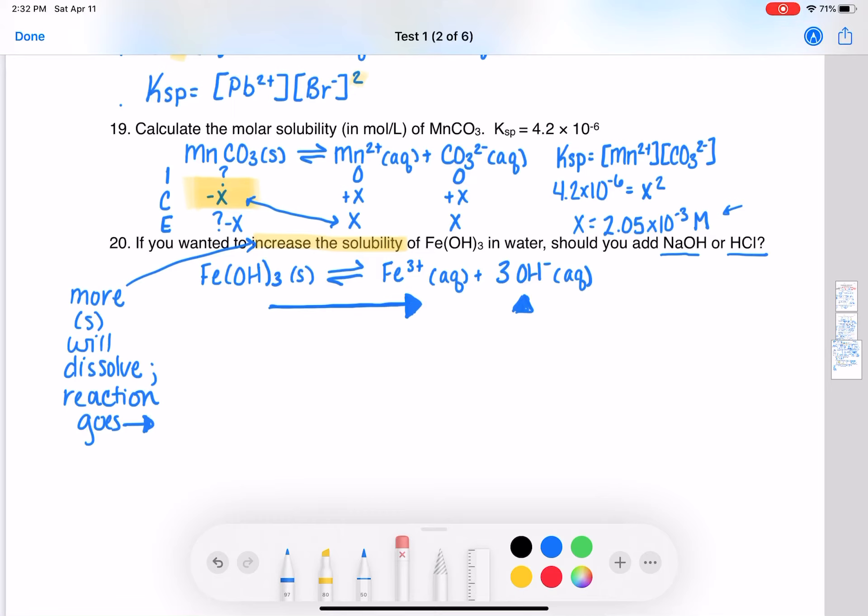It's the opposite of what we want. So just by process of elimination, we should be adding HCl. But let's also think about why that would work. If we add HCl, which is an acid, that means that we are going to react that HCl with our hydroxide, which is a base—that's the hydroxide that's being produced in this reaction.